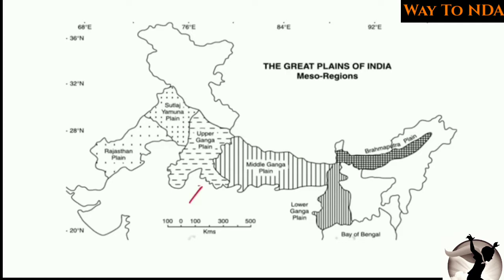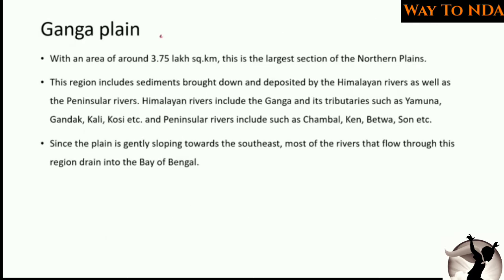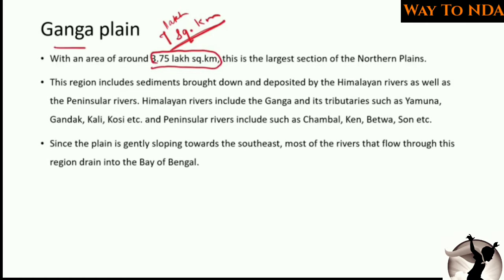The Ganga Plain is very important. Out of the total seven lakh square kilometers covered by the Northern Plains, the Ganga Plain covers 3.75 lakh square kilometers, making it the largest section of the Northern Plain. This region includes sediments deposited by both the Himalayan rivers as well as the peninsular rivers.